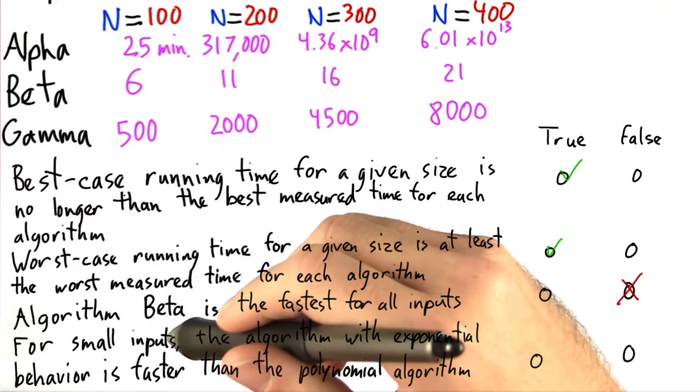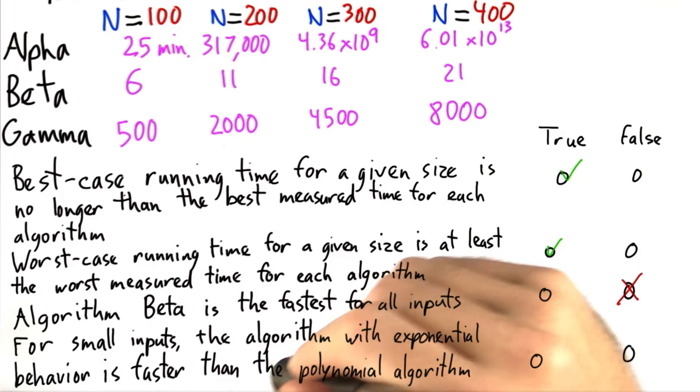And for the final question, we're asking if for small inputs the algorithm with exponential behavior is faster than the algorithm with polynomial behavior. And this is actually true.